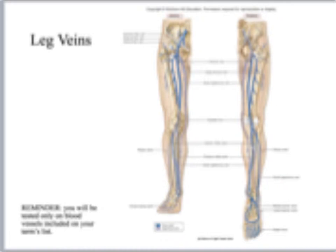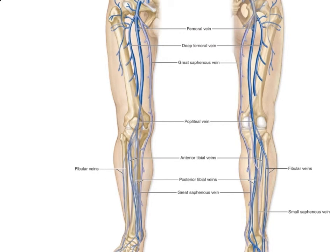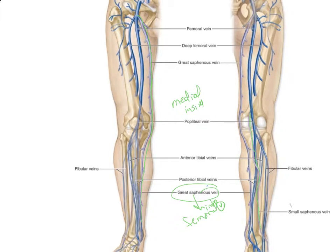Just like with the arteries, we do have some superficial veins. The two superficial veins you're going to learn are the great saphenous, which is on the medial or inside, and the small saphenous, which is more lateral and posterior. The small saphenous comes up and empties into the popliteal vein, whereas the great saphenous snakes all the way up and empties directly into the femoral vein.